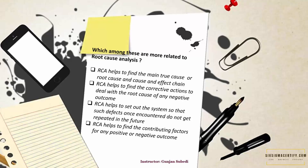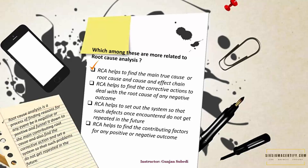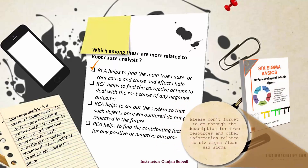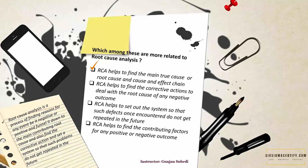Which among these are more related to root cause analysis? You can pause the video now. Actually all are the right answers to this question. Root cause analysis is a process of finding reasons for any event, be it negative or positive, and funneling it down to the main contributing root cause, while also finding the corrective actions and setting a system so that such problems do not get repeated in the future. It also finds the contributing factors for any positive or negative outcome. So all the options to this question are correct.